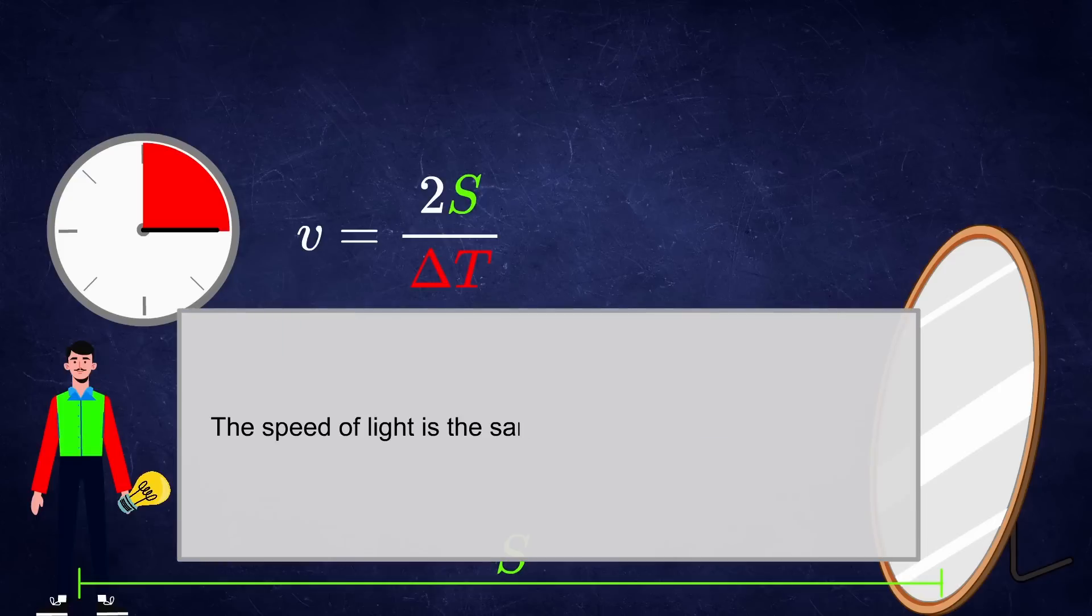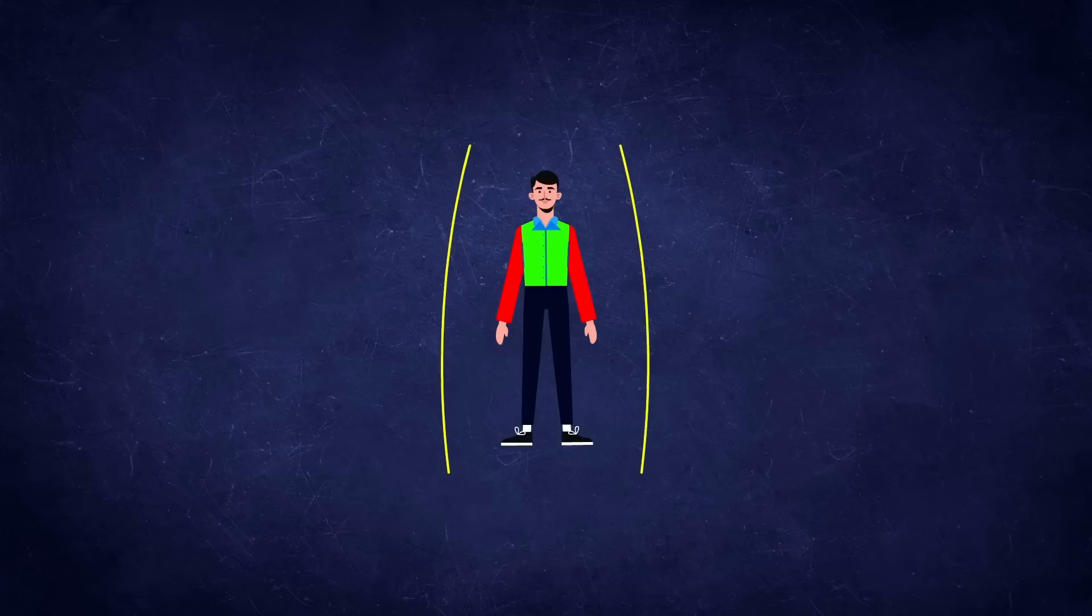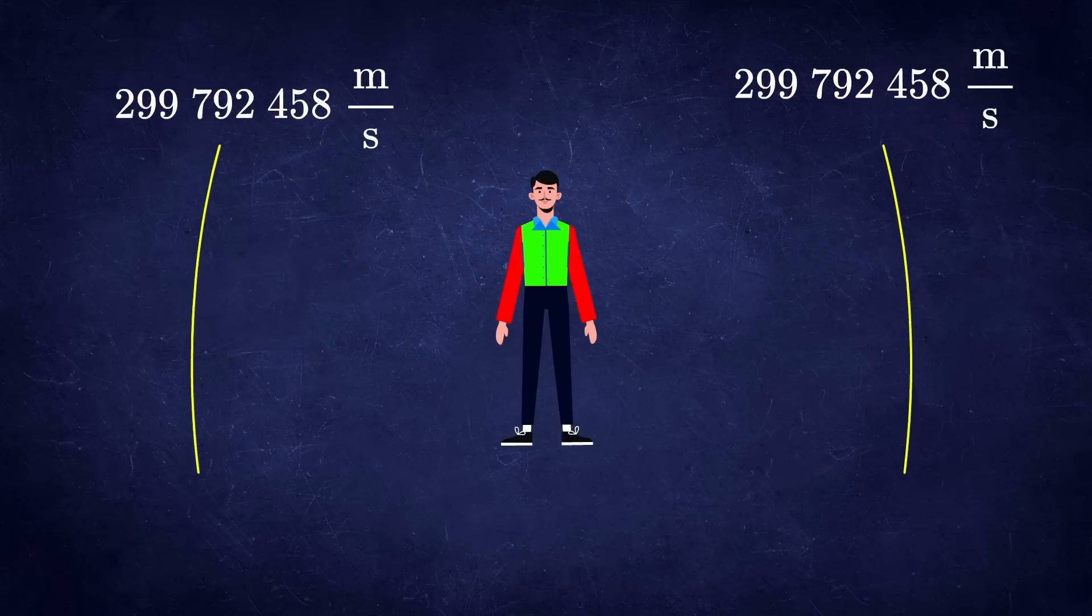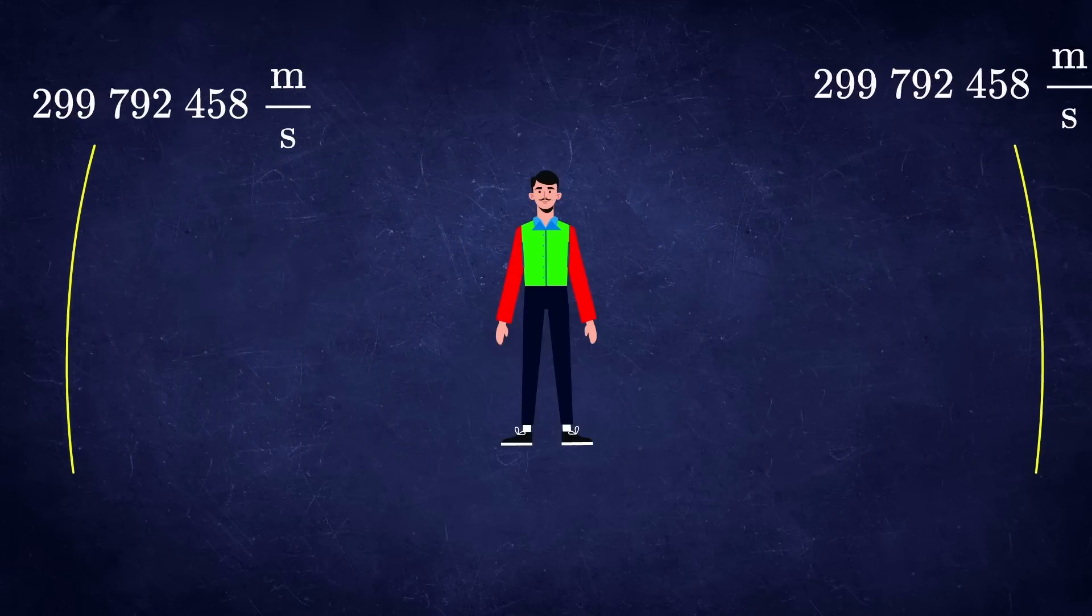One of the postulates of Einstein's special theory of relativity tells us that the speed of light is always one particular number in every frame of reference. This means that it shouldn't matter whether the light is moving to the left or to the right direction. We should measure the same speed in both directions.